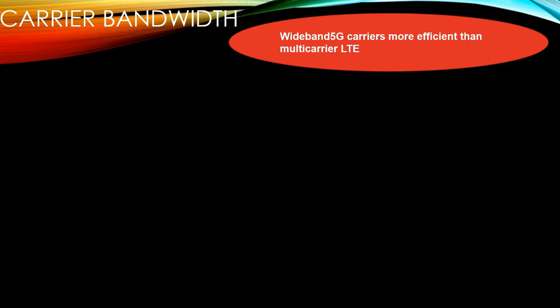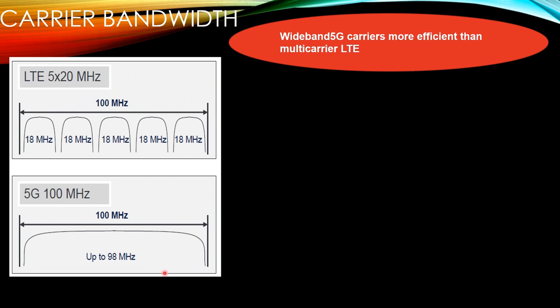Carrier bandwidth: going back to 2G, the channel bandwidth was 200 kHz. It evolved to 5 MHz in 3G using CDMA, then to a maximum of 20 MHz per carrier in LTE. In 5G it's a different story — we can go practically right now with a lot of equipment up to 100 MHz, and it may increase very soon to up to 400 MHz if spectrum is available.